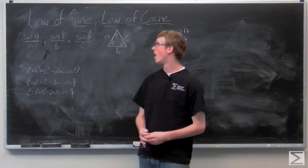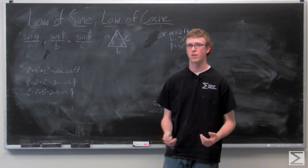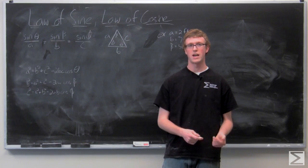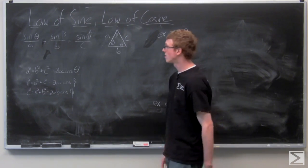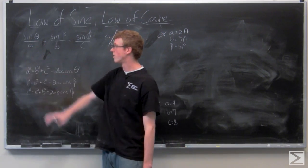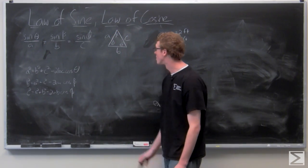The law of sine and cosine both relate the angles of a triangle to the sides of a triangle. The law of sine is super easy to use. We have the sine of an angle theta over the side opposite it.